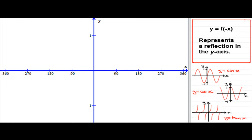Hi, welcome to this tutorial on transformations of trigonometric graphs. I'm assuming you're familiar with the three trigonometric graphs: y equals sin x, y equals cos x, and y equals tan x. What we're going to look at is transforming any of these graphs, y equals f of x, by applying y equals f of minus x. And what this represents is a reflection in the y-axis.